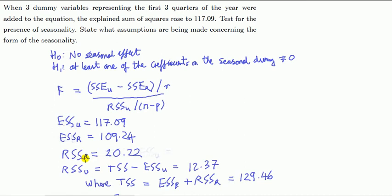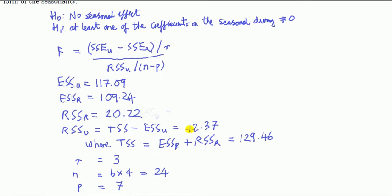Now residual sum of squares from the unrestricted model, I'll have to calculate it. It's TSS (total sum of squares) minus explained sum of squares from unrestricted. We need to work this out because we're not given it in the question. Use the relationship that TSS equals explained sum of squares plus residual sum of squares for whichever model we are looking at. Important remark: TSS is the same irrespective of which model we're using, unrestricted or restricted.